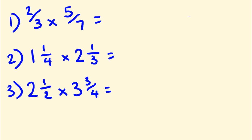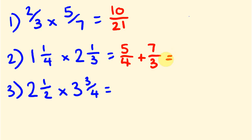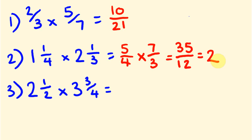Let's work through the answers. For the first one: two times five is ten, and three times seven is twenty-one. There's no number that goes into both of those, so the answer is ten over twenty-one. For the second one, these are mixed numbers so we convert: one times four is four plus one is five over four, and two times three is six plus one is seven over three. Then multiply: five times seven is thirty-five over four times three which is twelve. Thirty-five divided by twelve goes twice — two twelves are twenty-four — with eleven left over. So the answer is two and eleven twelfths.